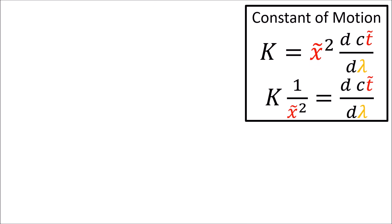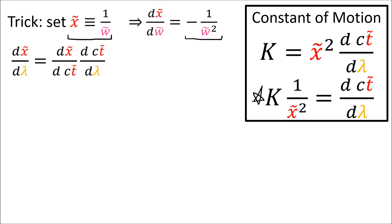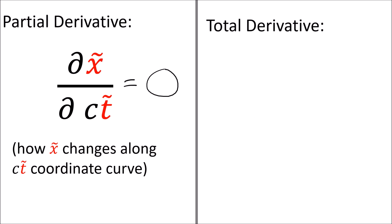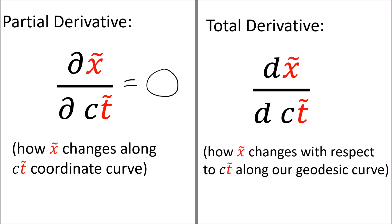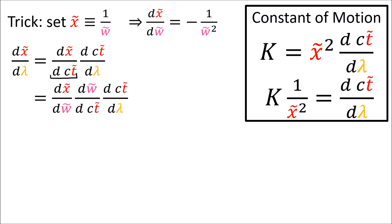We can write this as k times 1 over x-tilde squared equals the derivative of ct-tilde. Our next trick is to introduce a new variable: we'll define 1 over w-tilde to be equal to x-tilde. Using power rule, d(x-tilde)/d(w-tilde) is minus 1 over w-tilde squared. If we take d(x-tilde)/d(lambda) and use chain rule, we get d(x-tilde)/d(ct-tilde) times d(ct-tilde)/d(lambda). Note that this is single-variable chain rule, not partial derivatives — here x-tilde and ct-tilde describe a single curve so they are not independent of each other.